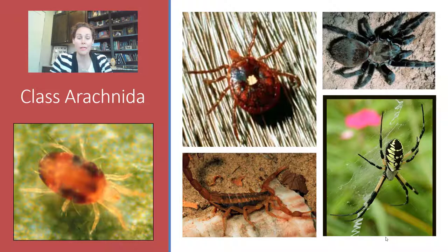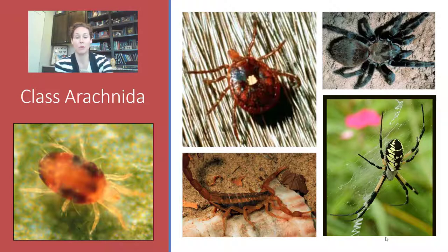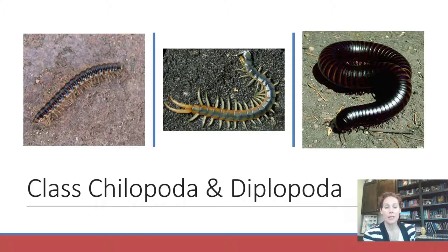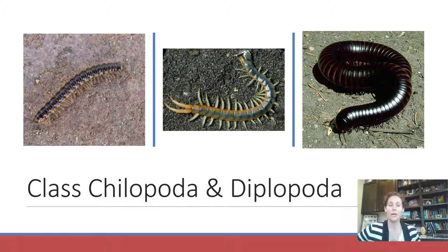Class Arachnida includes ticks, mites, scorpions, all spiders, tarantulas, vinegaroons, whip scorpions, pseudo scorpions, and many other things you might be familiar with in far west Texas. Then there is class Chilopoda and Diplopoda — two different classes. Chilopoda are the centipedes, and Diplopoda are the millipedes.